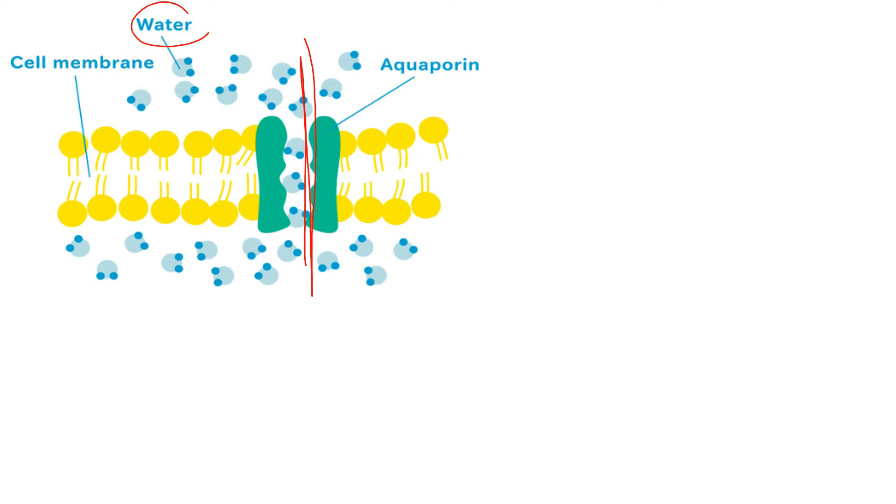The cell membrane of a variety of different bacteria, fungi, animal and plant cells contains aquaporins through which water can flow out of the cell by diffusing through the phospholipid bilayer.